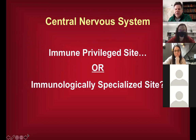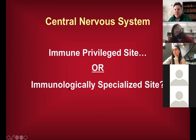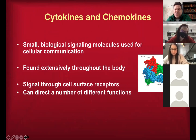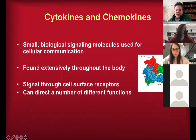We've talked about the CNS being an immune-privileged site, though it's better to think of it as an immunologically specialized site — not truly privileged per se. Cytokines and chemokines are small biological signaling molecules used for cell-cell communication throughout the body. They signal through surface receptors and can have a number of different functions.